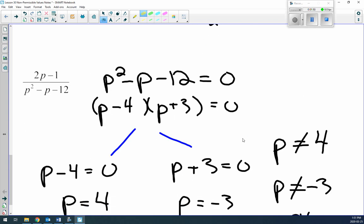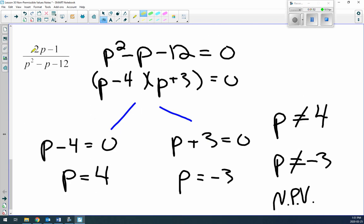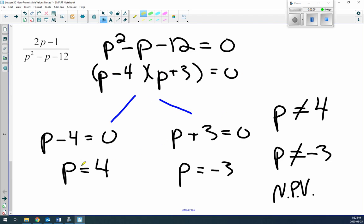All right, look at the last one. (2p-1) is the numerator. We don't care about that. We only care about the denominator. This trinomial, p²-p-12, we set equal to zero. This factors into two nice binomials: (p-4) and (p+3). Set them both equal to zero: p equals 4, p equals negative 3. So p cannot equal 4 and p cannot equal negative 3. Those are both non-permissible values.